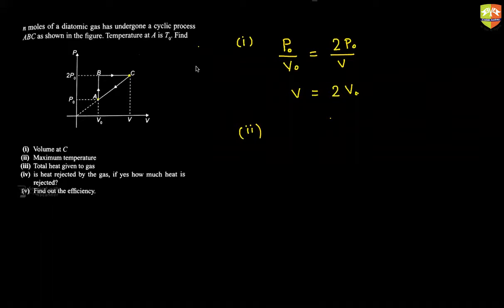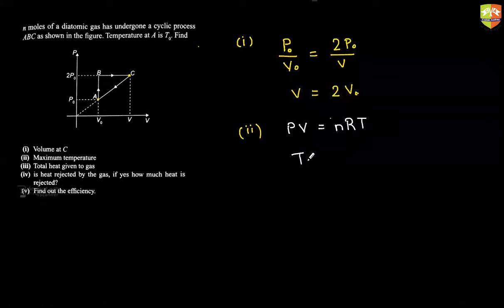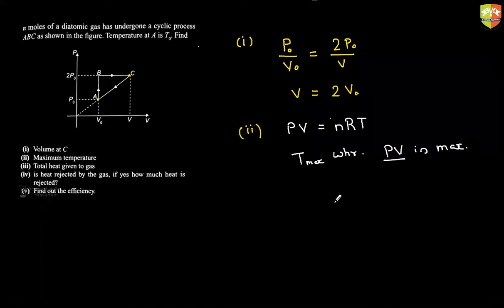Now solve for maximum temperature. Does it have to be at point A, B, or C? Not necessarily. Since PV = nRT at every point, temperature is maximum where P times V is maximum. Is there any point where PV is greater than at C? It will be at C only.